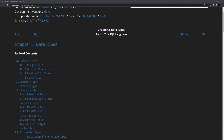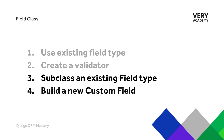In more advanced cases we can actually create new data types in a Postgres database, which is a really useful feature. So hopefully that's given us an overview and a starting point which we can expand throughout this section of the course. The rest of this section will focus on providing details and examples of building custom fields, starting from subclassing existing fields and moving towards more advanced features and approaches.